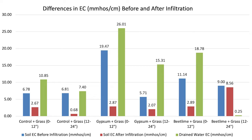Except one sample, there was a big drop in soil EC after infiltration. Decrease in EC ranged between 60 to 90 percent. The one sample that only had an EC decrease of 4.89, or about 5 percent, was from the beet lime plot for the depth of 12 to 24 inches. The lowest decrease in EC could be that this sample infiltrated water in 24 minutes, which was the fastest.